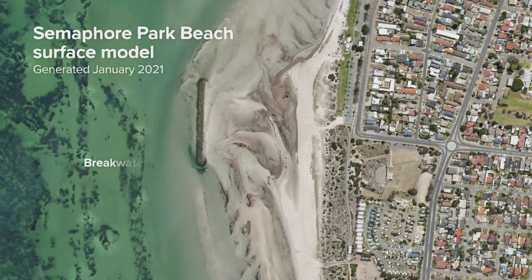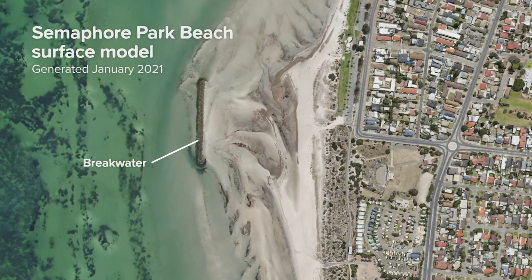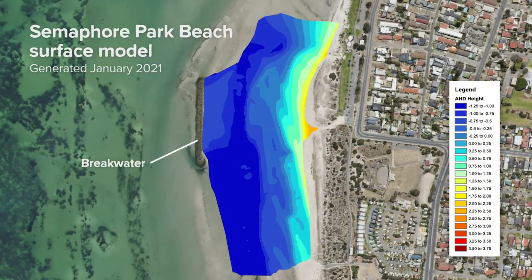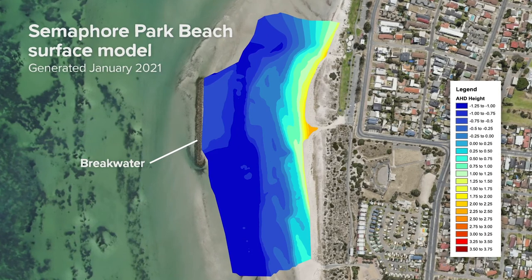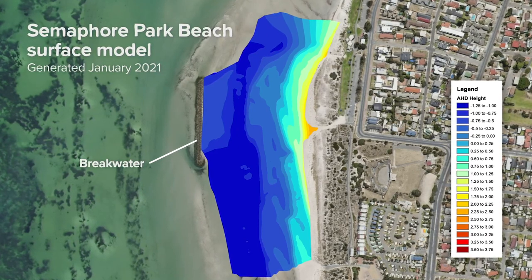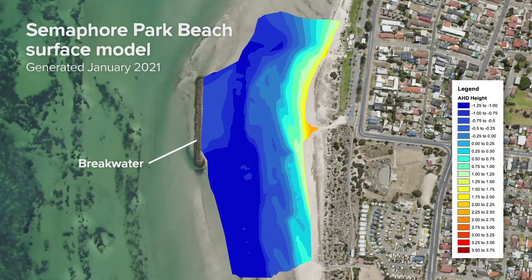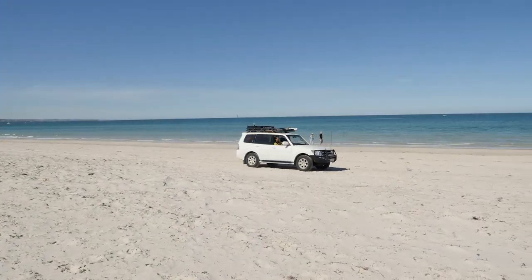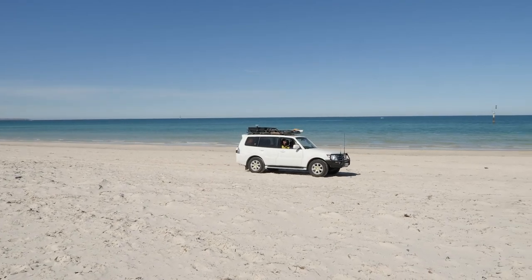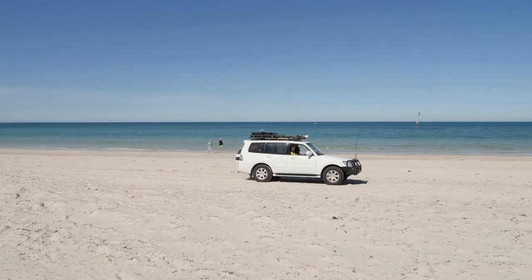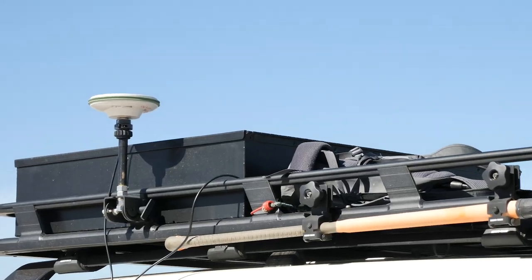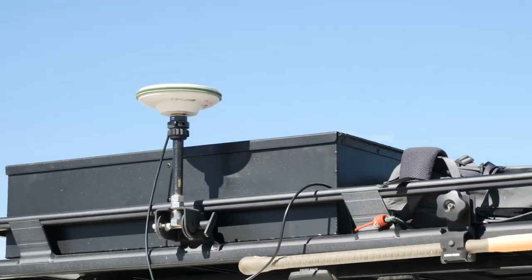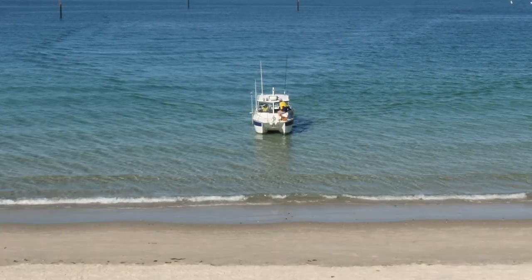Surface models, also known as topographic models or digital elevation models, are a dense grid of surface height points. The surveyors use GPS fixed to a quad bike or a four-wheel drive on the land and combine this with boating on the water.